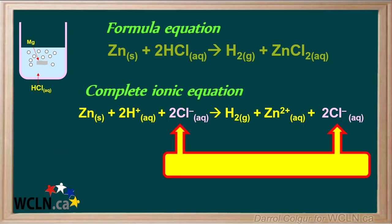Notice there are two Cl⁻ ions on the left side and the right side of this equation — the Cl⁻ ions haven't changed at all in this reaction. Just as people who attend sporting events but don't participate in the game are called spectators, the Cl⁻ ions are present but do not participate in the reaction. So Cl⁻ ions are called spectator ions.